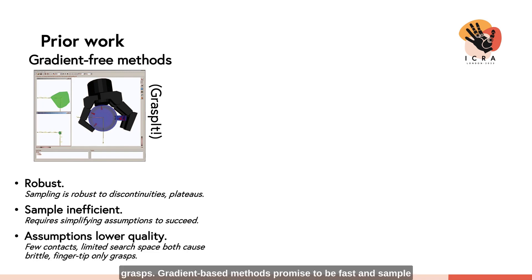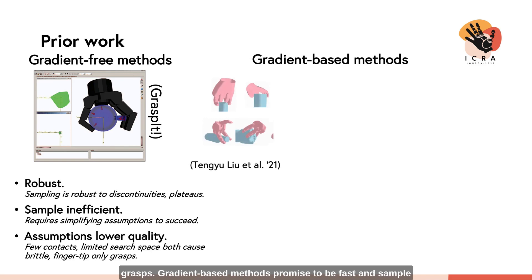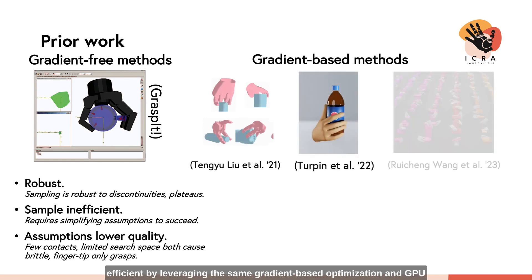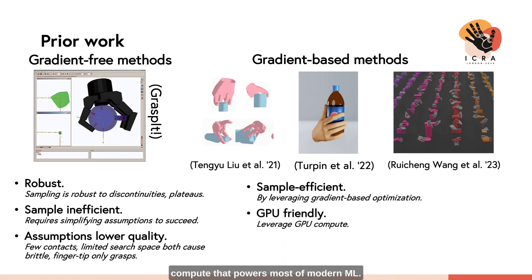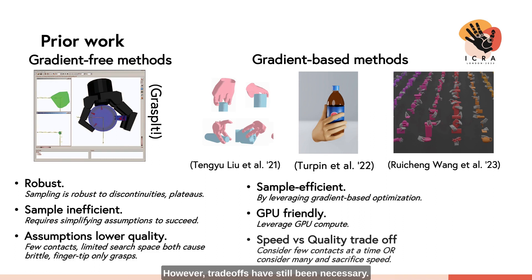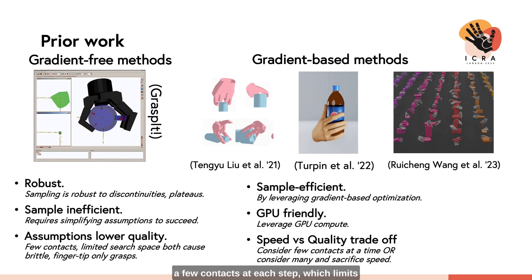Gradient-based methods promise to be fast and sample-efficient by leveraging gradient-based optimization and GPU compute that powers most of modern ML. However, trade-offs have still been necessary to keep computation time reasonable. Prior work has been limited to considering only a few contacts at each step, which limits the discovery of contact-rich grasps.